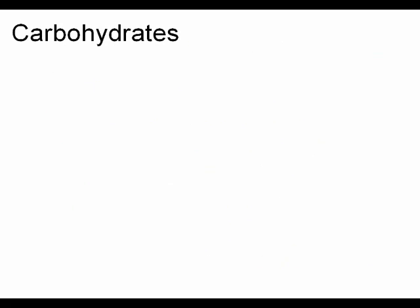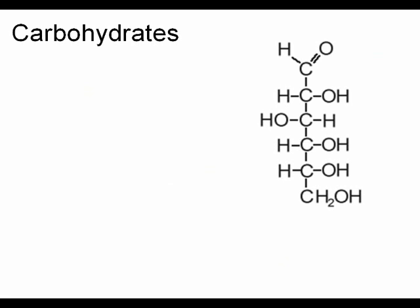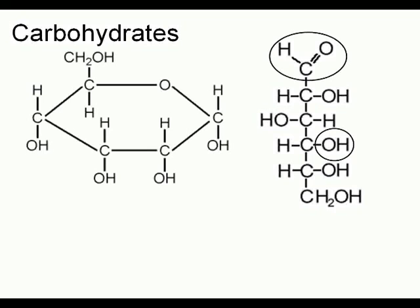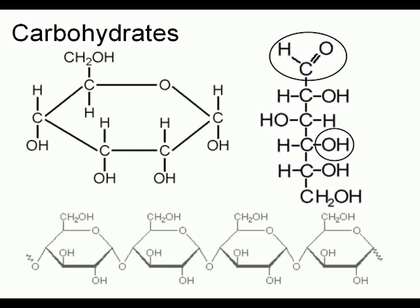The next nutrient we will be discussing is carbohydrates. Carbohydrates, specifically glucose, fuel metabolism. Glucose is present in glycolysis, the first stage of metabolism. The functional groups present in glucose are aldehyde and alcohol compounds. This is a linear form of glucose; however, it is also found in a circular form. These circular forms can bond together through condensation reactions, forming covalent bonds that link them together.